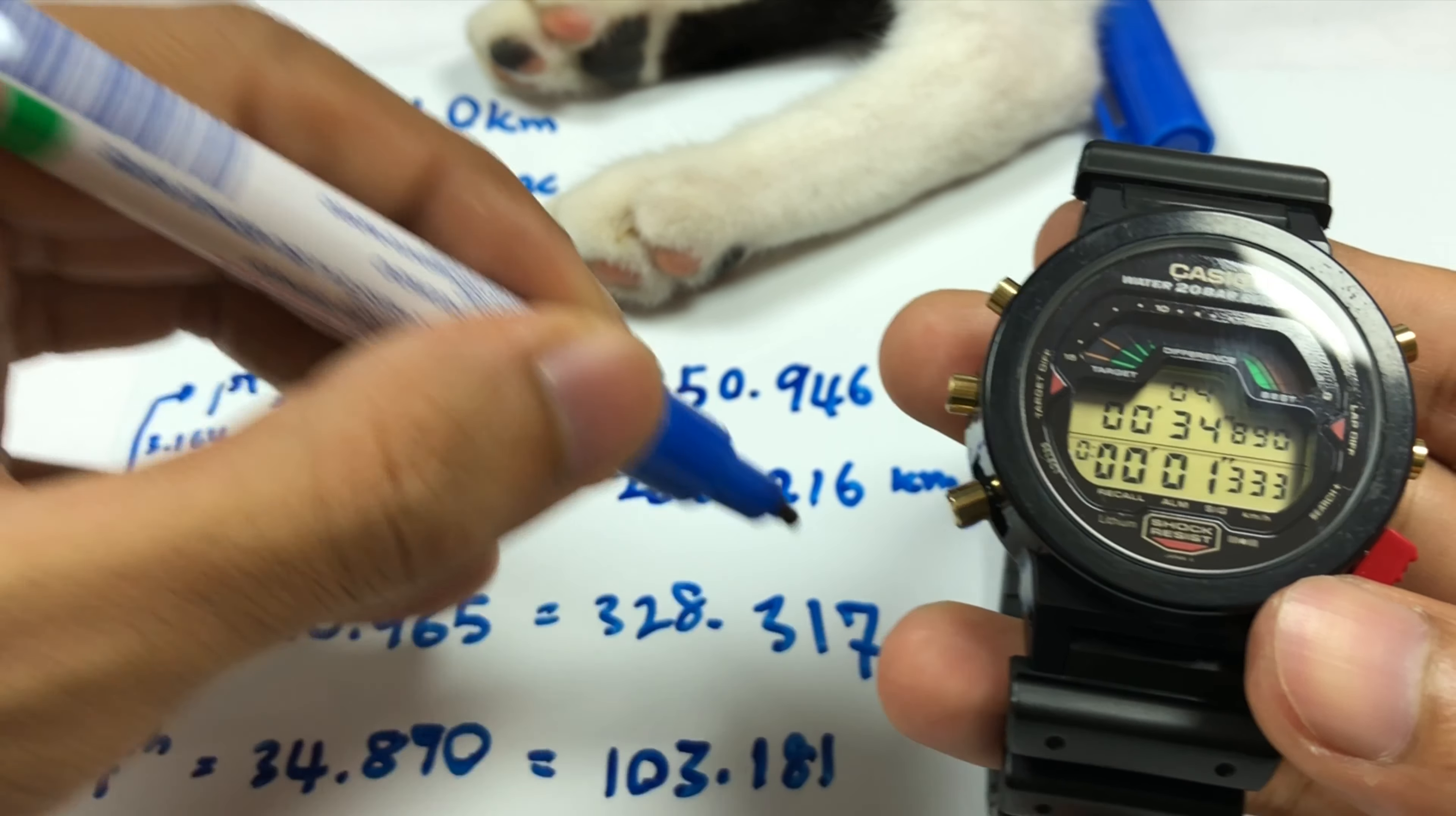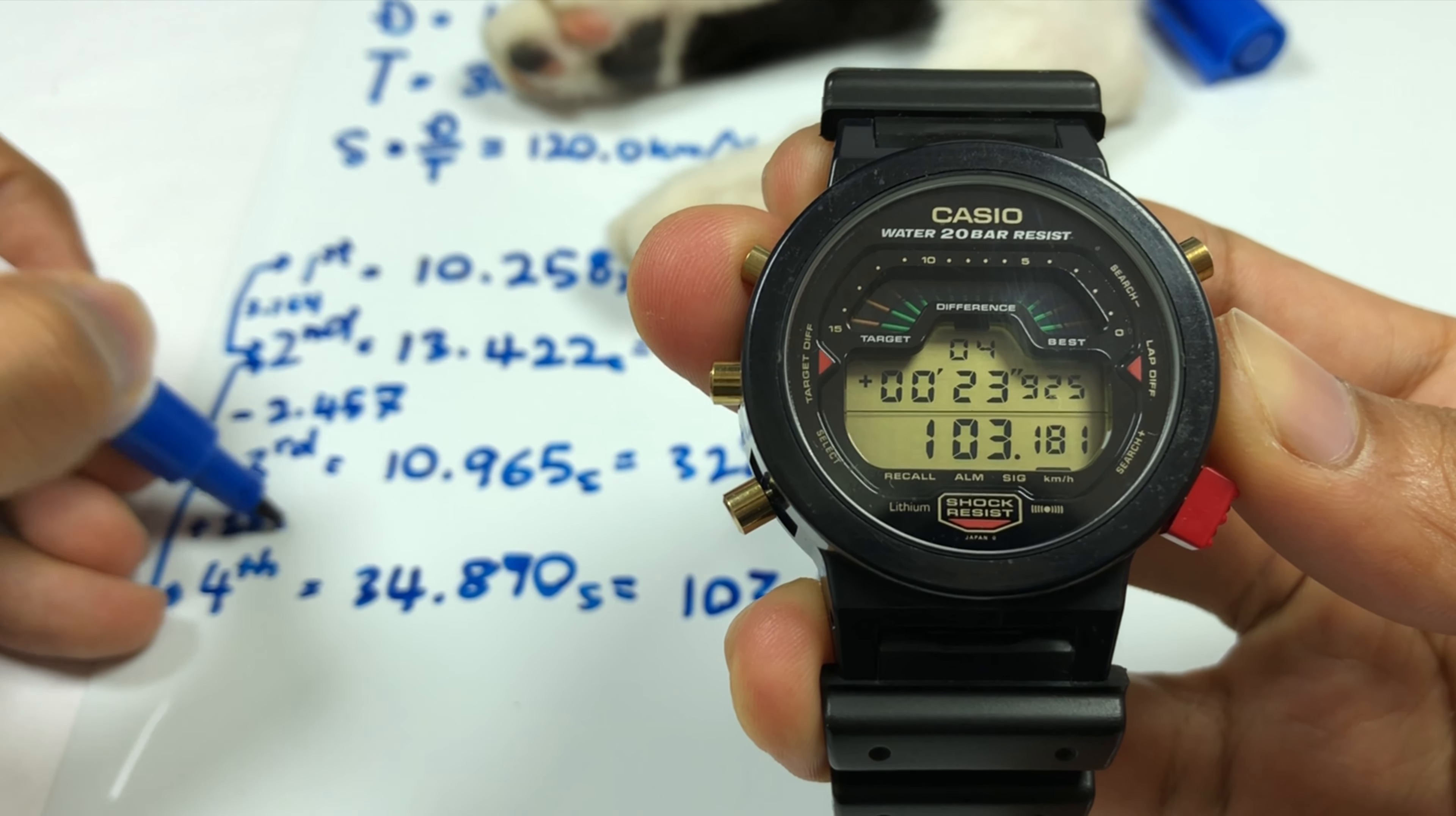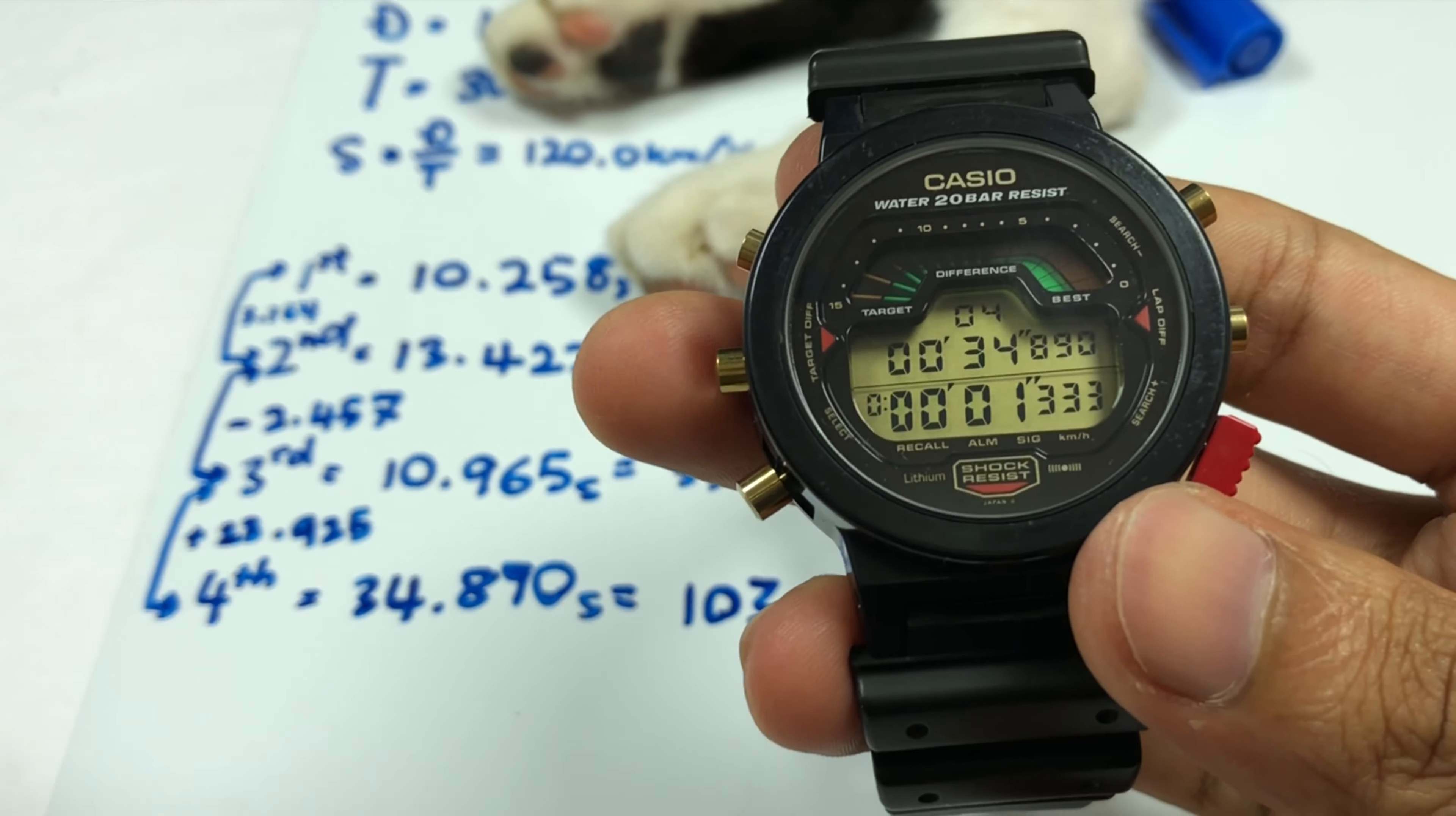We are now at 34.890 seconds. Our speed is 103.181 kilometers per hour. The time gap is plus 23.925, and our time difference between this time and our target time of 30 seconds is 4.890 seconds.